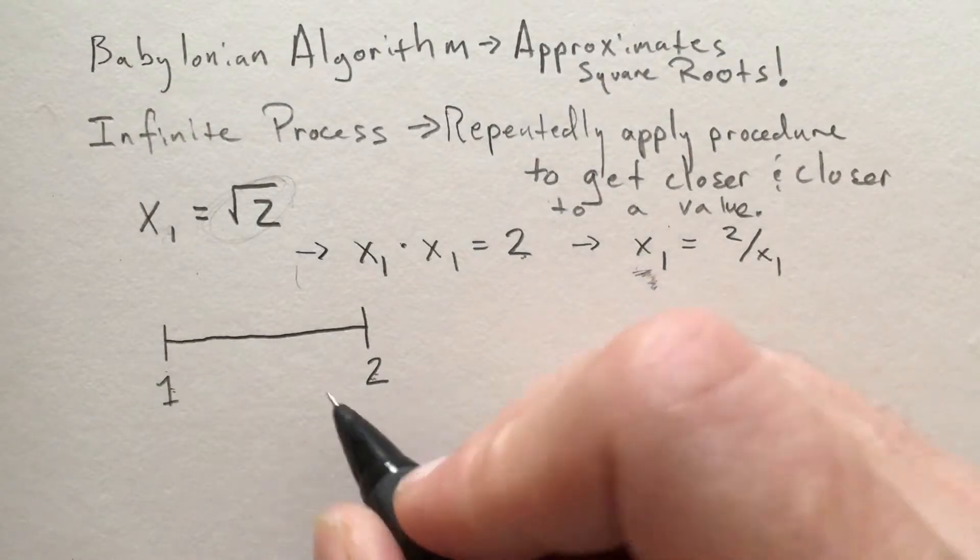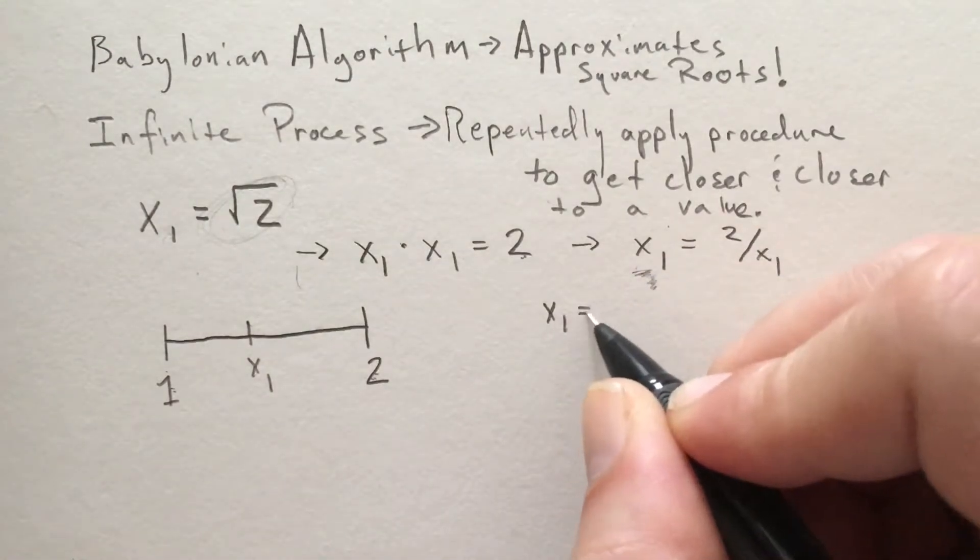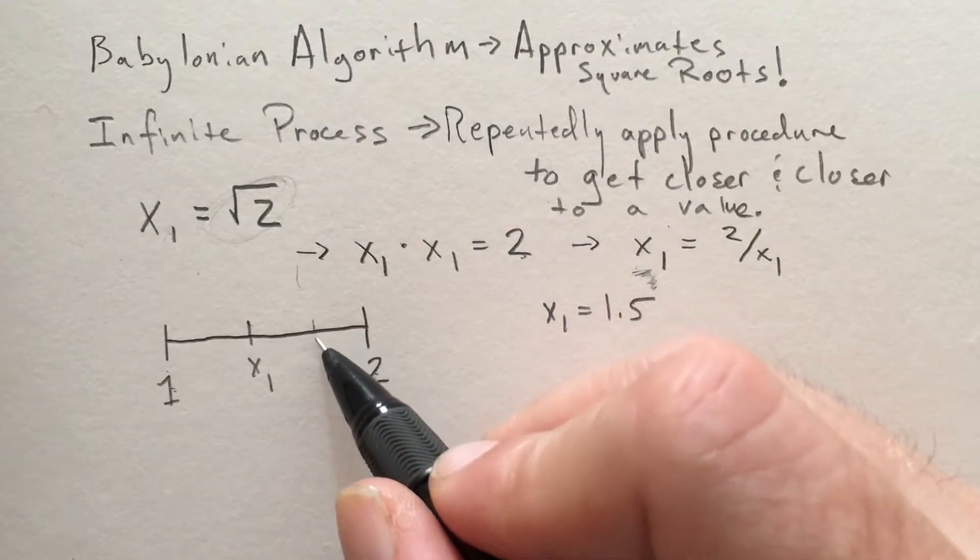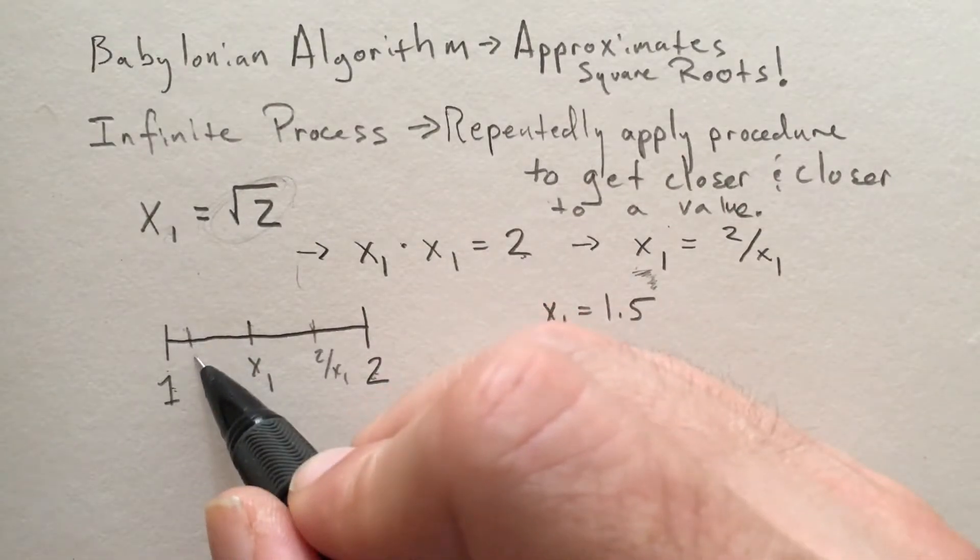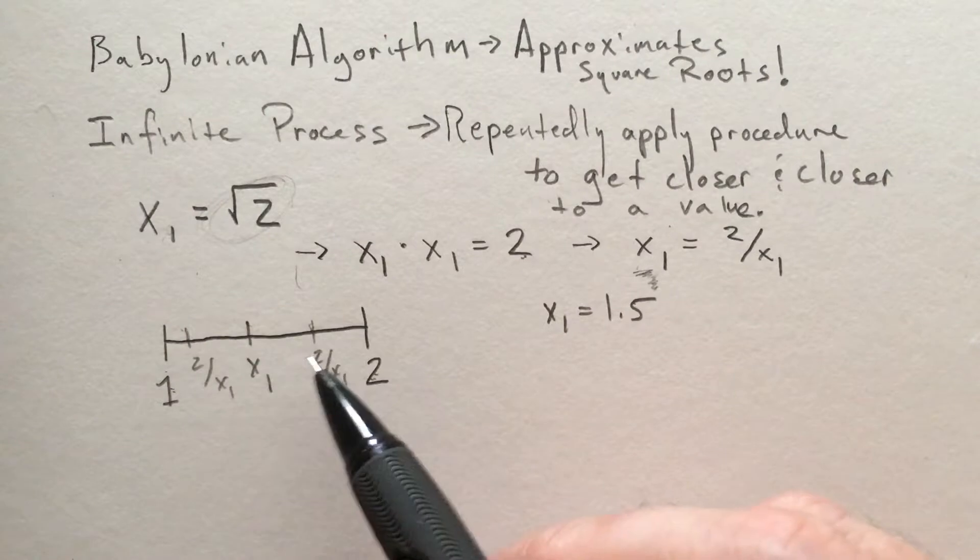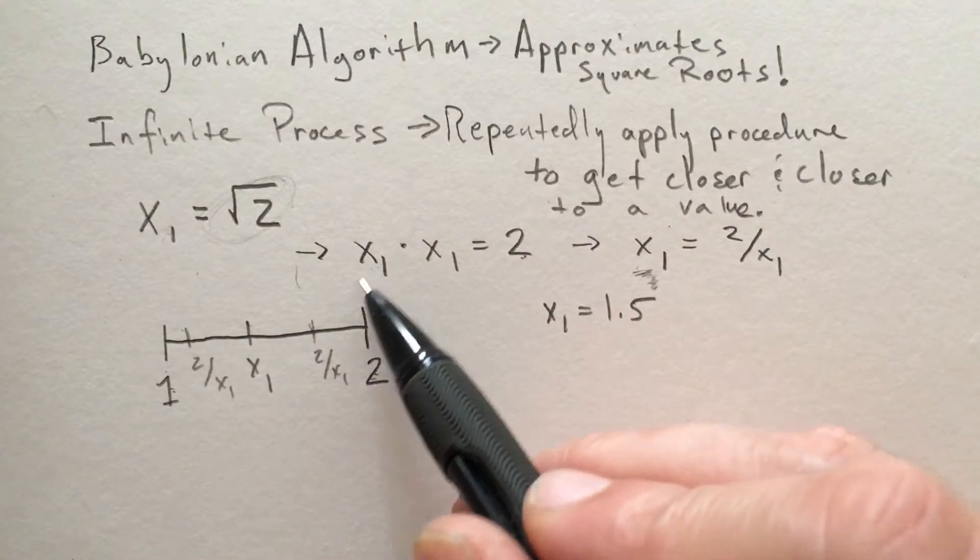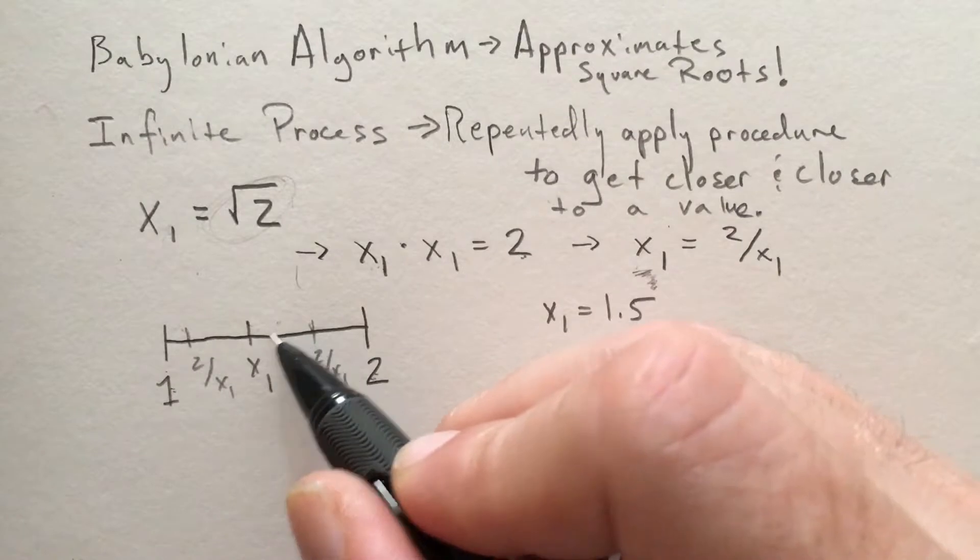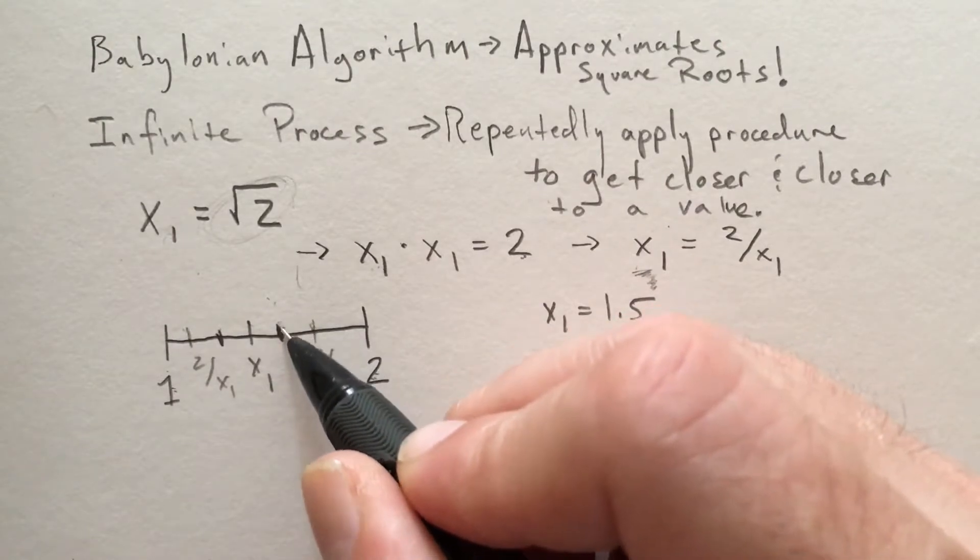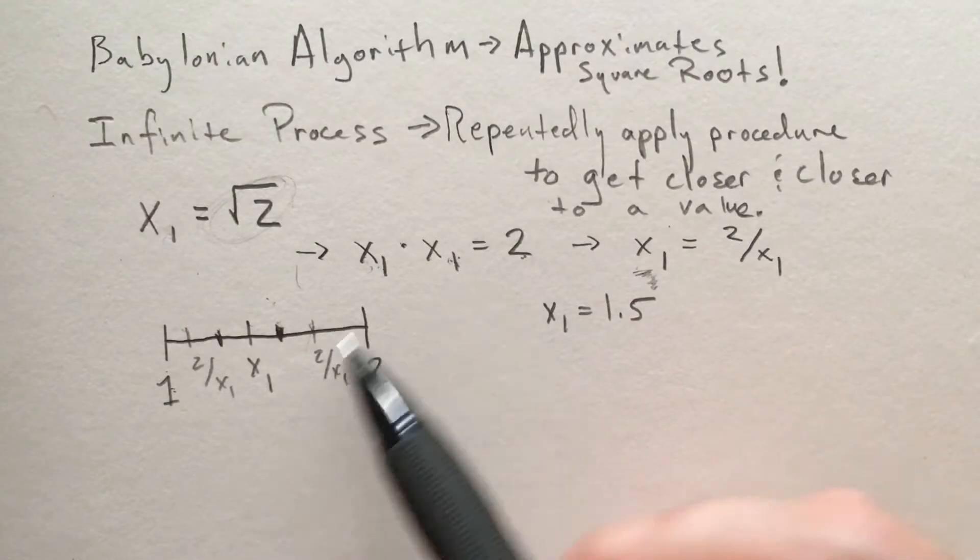Let's say we choose x₁ right in the middle here as 1.5. Then 2 over x₁ could be either to the right or to the left, depending on that initial choice. What's important to notice is that regardless of whether it's to the left or right, the actual root is going to be in between these. Because if x₁ is less than the actual root, then 2 over x₁ would have to be bigger than it to keep the product equal to 2, and similar on the other side.